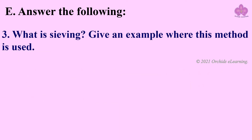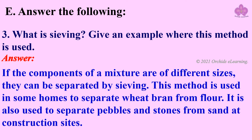What is sieving? Give an example where this method is used. Answer: If the components of a mixture are of different sizes, they can be separated by sieving. This method is used in some homes to separate wheat bran from the flour. It is also used to separate pebbles and stones from sand at construction sites.